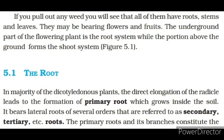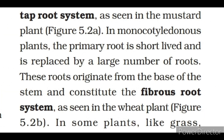The root. In the majority of dicotyledonous plants, the direct elongation of the radicle leads to the formation of the primary root, which grows inside the soil. It bears lateral roots of several orders that are referred to as secondary, tertiary, etc. roots. The primary root and its branches constitute the tap root system, as seen in the mustard plant.